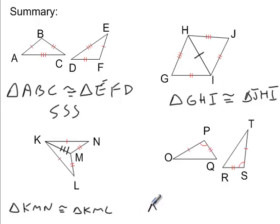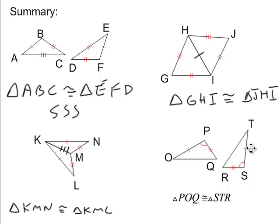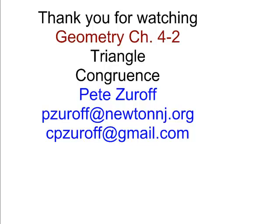Side, angle, side. So triangle POQ is congruent to STR. Double check: P is between one and two marks with a congruent angle symbol, and S is between one and two marks with a congruent angle symbol — the angle is included between those two sides. O is between one and no marks, T is between one and no marks. Q is between two and nothing, and R is between two and nothing. Side-angle-side. Thank you for watching Chapter 4-2 on triangle congruence — side-side-side and side-angle-side.